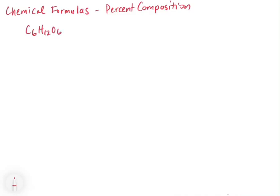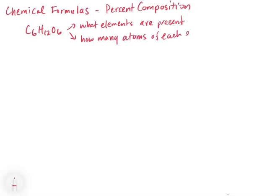This tells you really two things: it tells you what elements are present, and it tells you how many atoms of each element are in the molecule — or for an ionic compound, in the formula unit. So: what elements are present and how many atoms of each element are in the molecule.